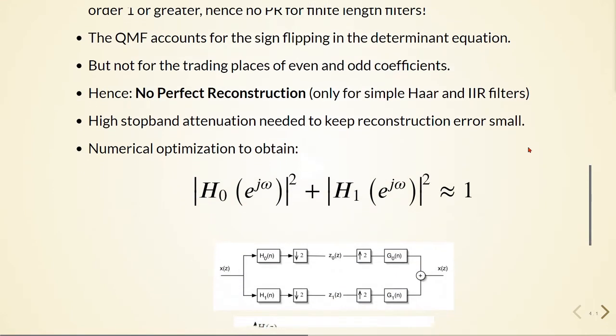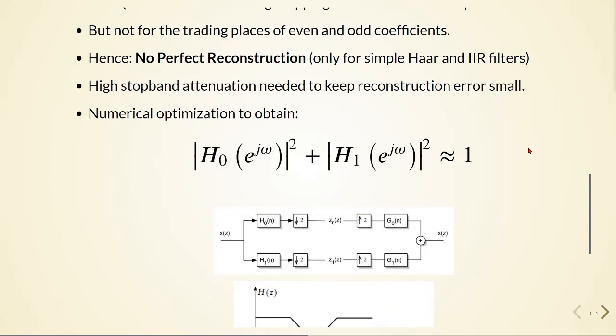So what we do is we use numerical optimization to obtain that the absolute value of H0 squared plus the absolute value of H1 squared is approximately equal to one.